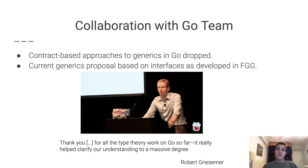Just to wrap up our talk, I'd like to briefly mention some of the consequences of our collaboration with the Go team. Namely, after our involvement, the contract-based proposals for generics were essentially dropped. In fact, the current proposal for generics is based on interfaces as developed in our work on FG and FGG. Overall, our work essentially helped clarify various features of the design at both the foundational level and the practical levels. That's all for our talk. You can look at our paper for more details or ask us questions in the next session. Thank you.